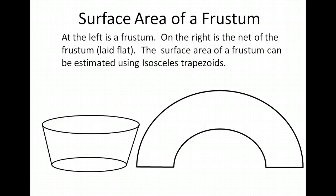On the left is a frustum. Notice it's very closely related to a cylinder except the sides are slanted. On the right is a net of the frustum. In other words, what we've done is taken the frustum, sliced it down the center and laid it flat.